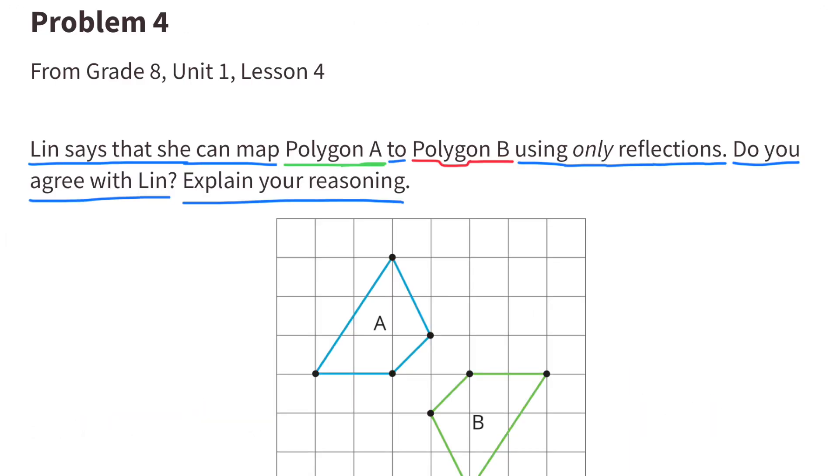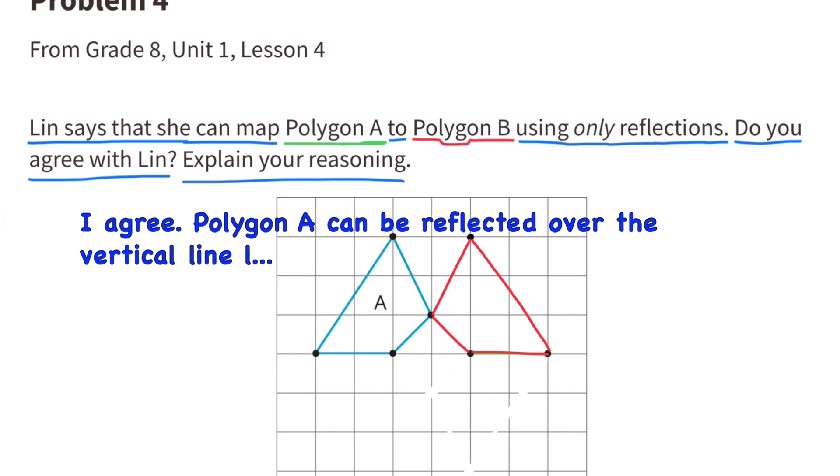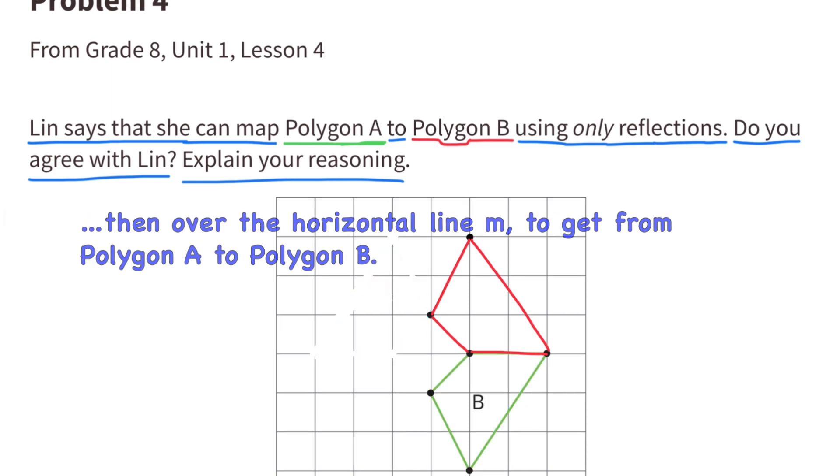Number 4. Lynn says that she can map polygon A to polygon B using only reflections. Do you agree with Lynn? Explain your reasoning. I agree. Polygon A can be reflected over the vertical line L, then over the horizontal line M, to get from polygon A to polygon B.